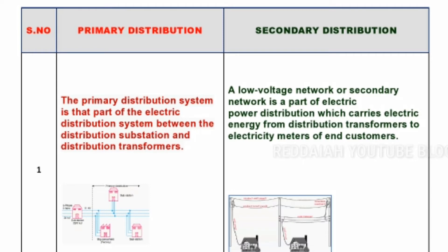The primary distribution system is the part of the electric distribution system between the distribution substation and distribution transformers. The secondary distribution system comes from the distribution transformer to consumer terminals, and it is in the form of service mains.